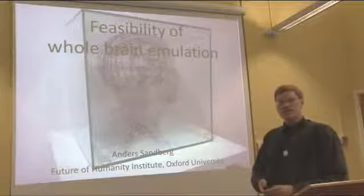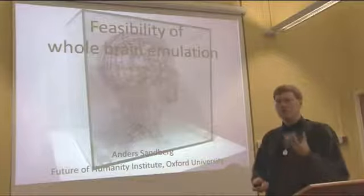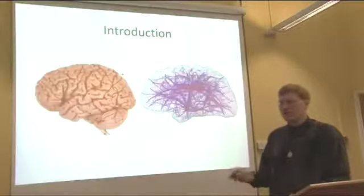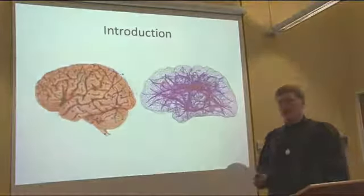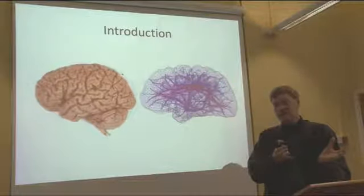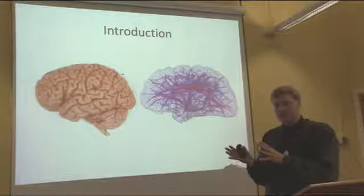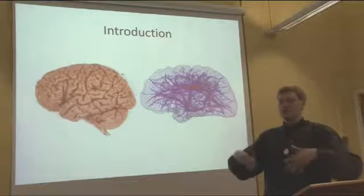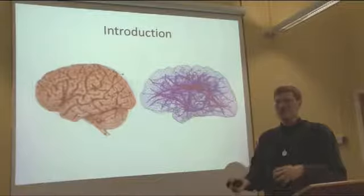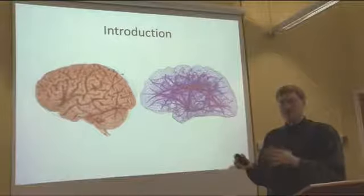This talk is about whether whole brain emulation is feasible, and in particular what the constraints on that feasibility are. The idea of whole brain emulation is to take a biological brain and turn it into a software simulation that encompasses all the relevant properties — a conceptual shortcut to creating software intelligence by taking real intelligence from animals or humans and creating software simulacra that exhibit the same kind of behavior.